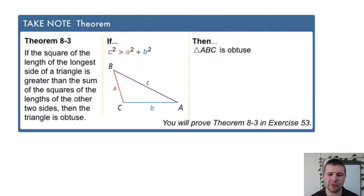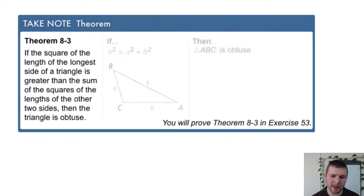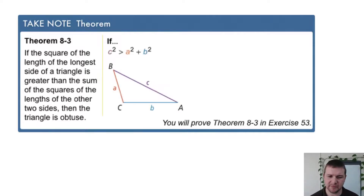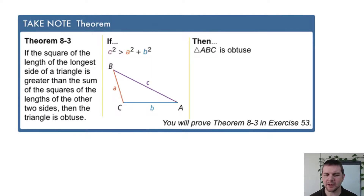Theorem 8.3 states: if the square of the length of the longest side of a triangle is greater than the sum of the squares of the lengths of the other two sides, then the triangle is obtuse. So if, in this diagram, C squared is greater than A squared plus B squared, then triangle ABC is obtuse.